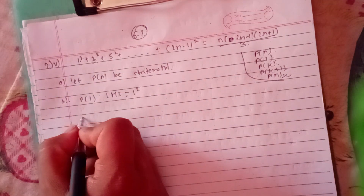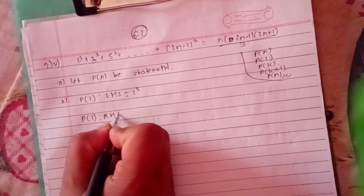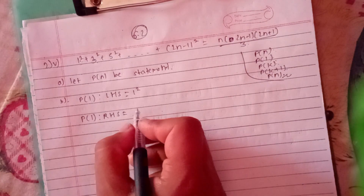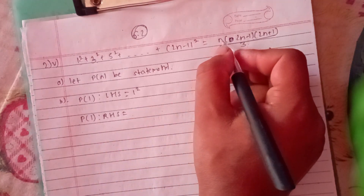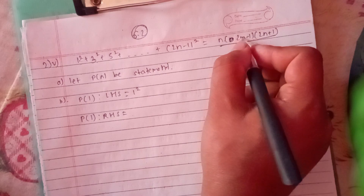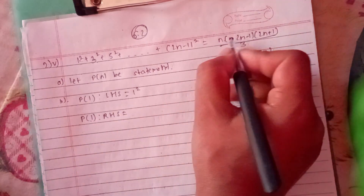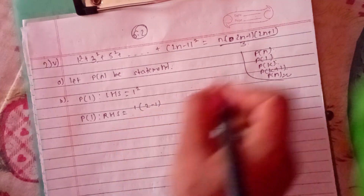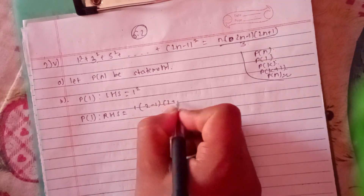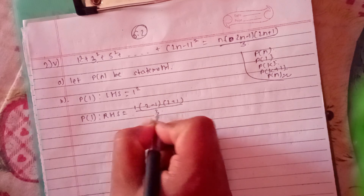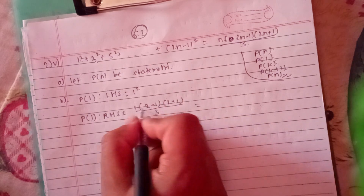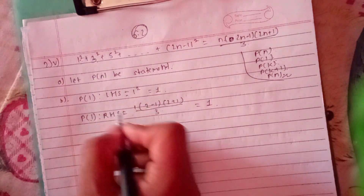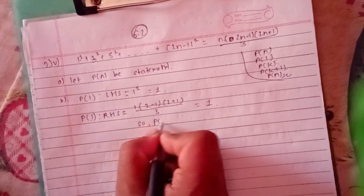Now we have P(1) RHS. In the RHS we have an expression. The value of P(1): n is 1, so 1 into 2(1) minus 1, which gives 2 plus 1 by 3 — that is 3 divided by 3, equals 1. LHS equals RHS, so P(1) is true.